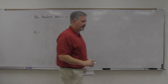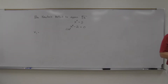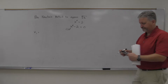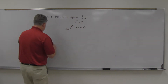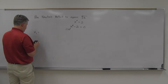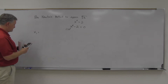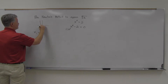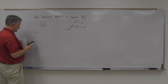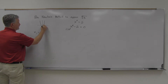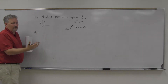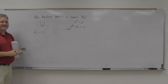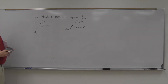Now if I graph it I get an idea of the root. Looking at the graph of x⁶ minus 2, we're talking about the positive root. Zooming in, it's real close to one — actually a little over, maybe 1.1. You could start with one, but to make it a little closer, I'll use 1.1 as the initial approximation x₁.